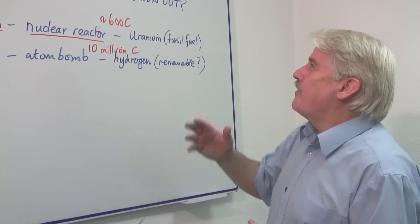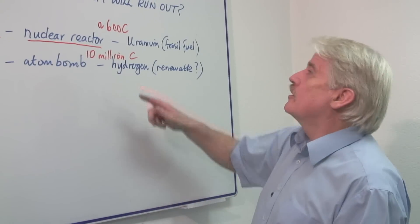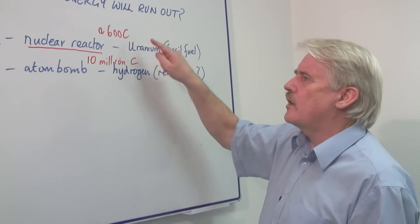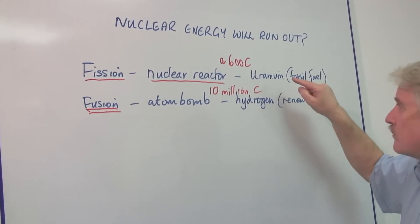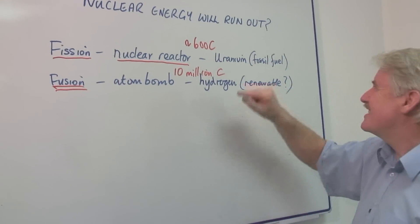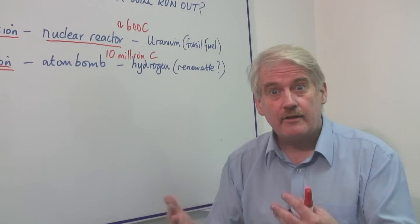So the answer to the question is yes, nuclear energy will run out if it is produced by a fission process from uranium. Because uranium is going to run out. It is a fossil fuel. You dig it out the ground.